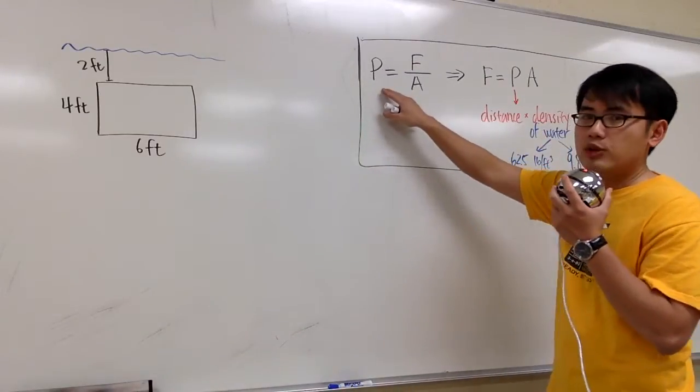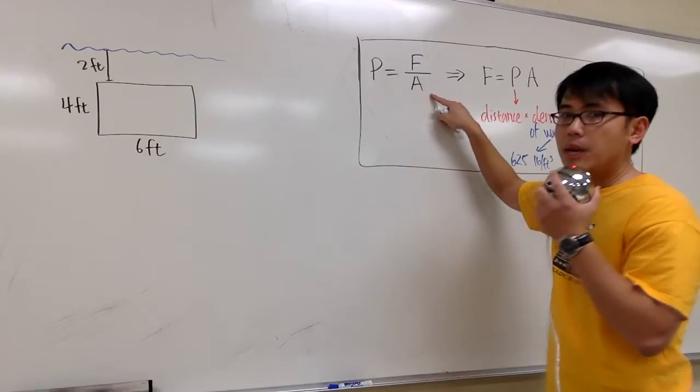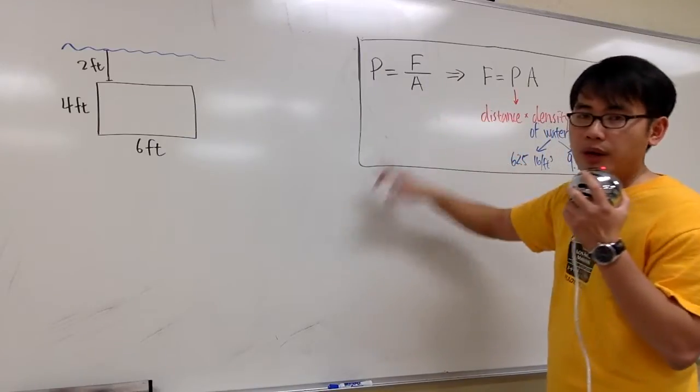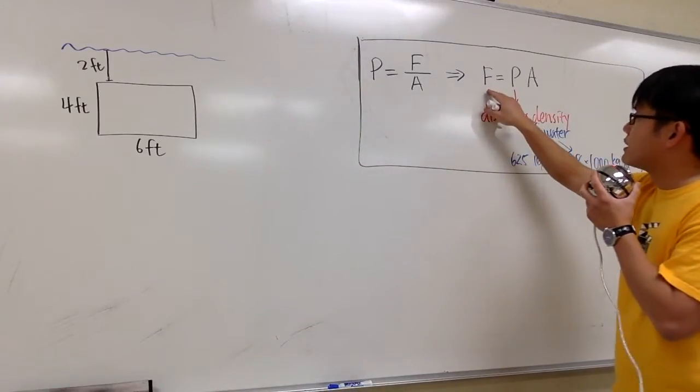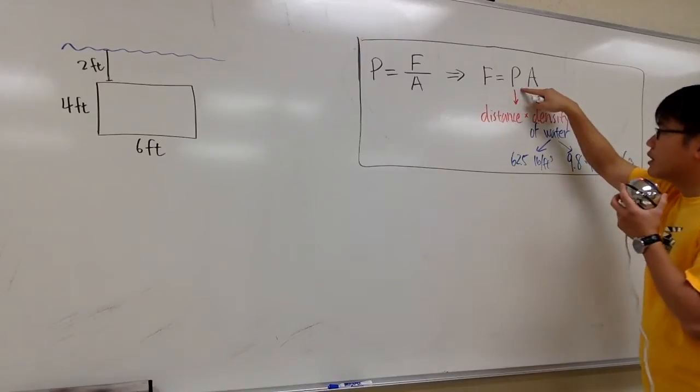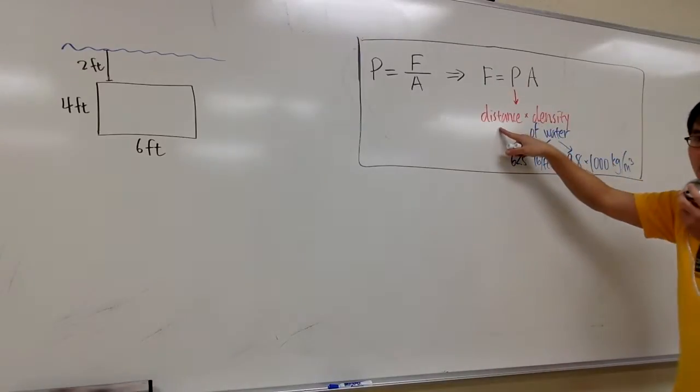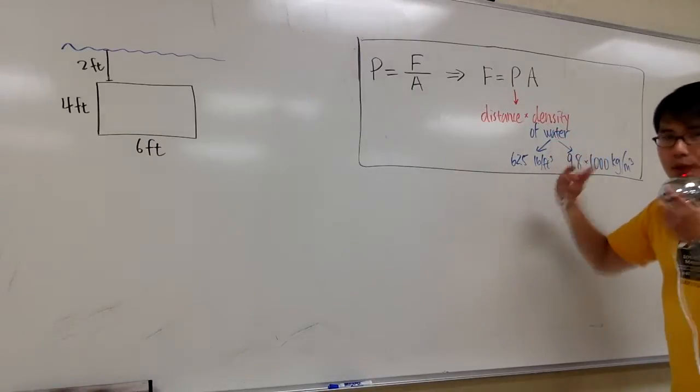And we are going to make a connection between pressure and force. Pressure is equal to force divided by area. But then the question is, we are going to calculate the hydrostatic force. So we are going to look at force. It's equal to pressure times area. And what's pressure? Pressure depends on how deep down you are underneath the water. And it also depends on what kind of liquid that you are dealing with.